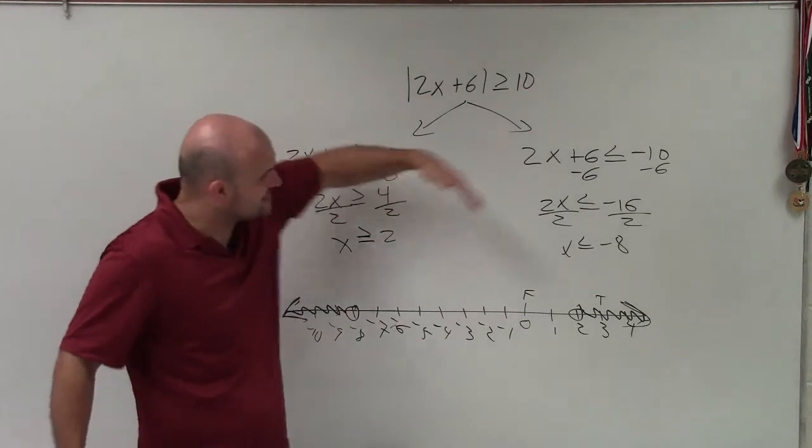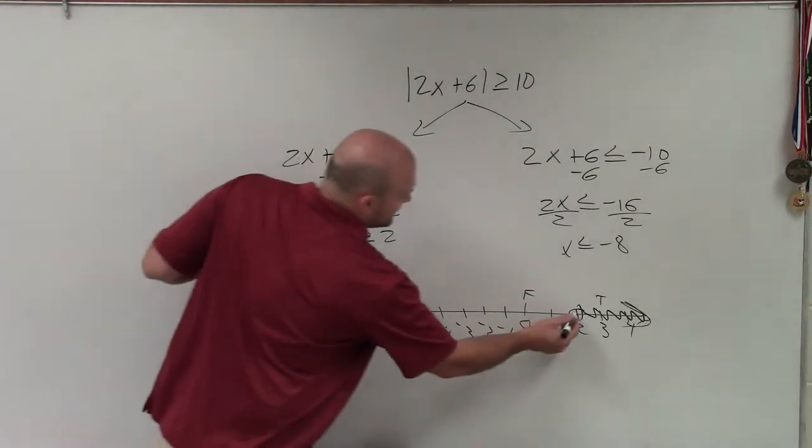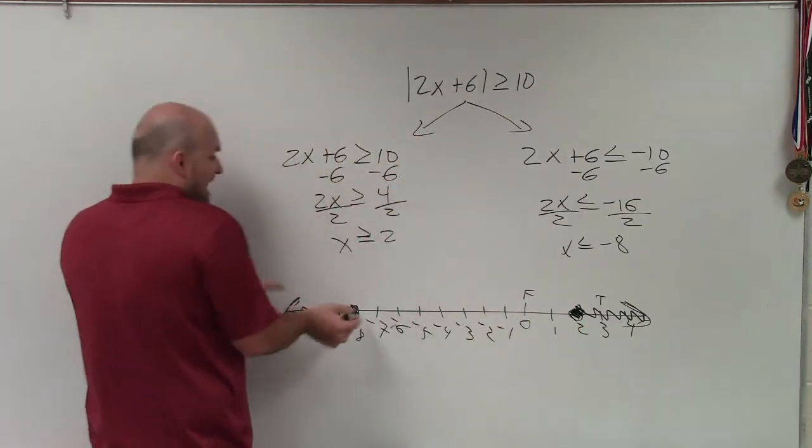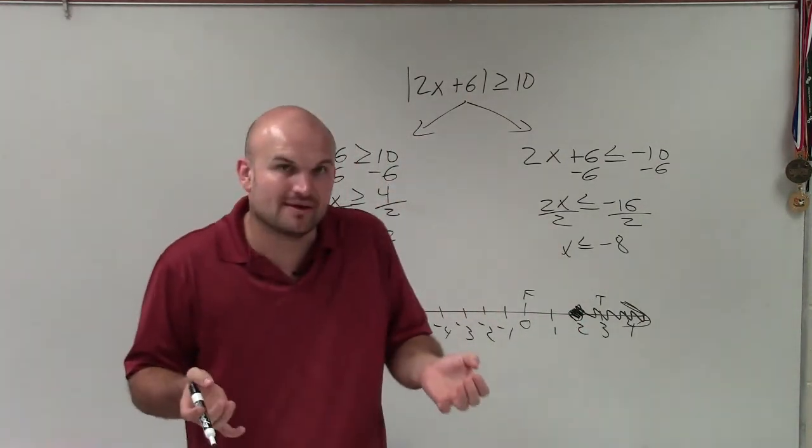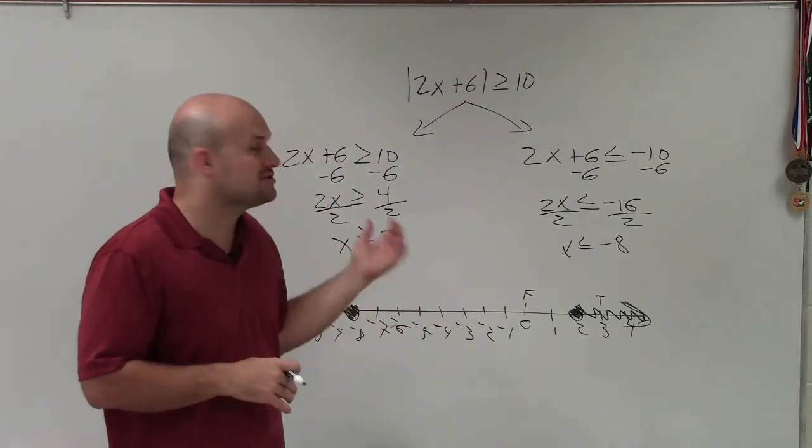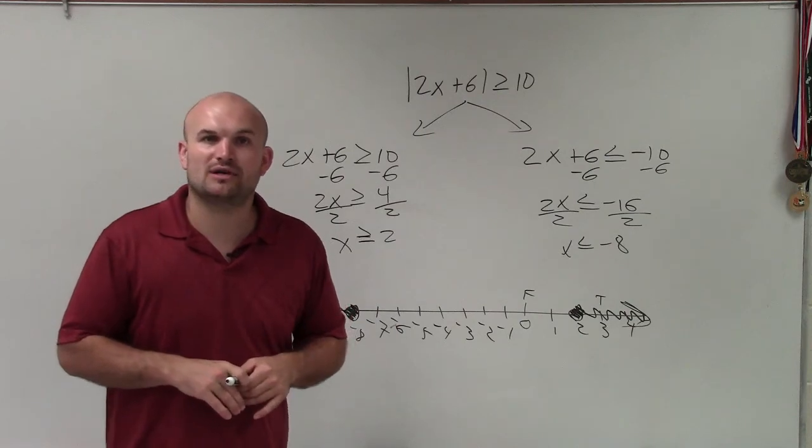Now, remember, since these are both less than or equal to, I know that I'm going to shade in both of these points. You can also test each one of these points for your inequalities. And since it says equal to, then they are going to be true. So there you go, ladies and gentlemen. That is how you graph and solve an absolute value inequality. Thanks.